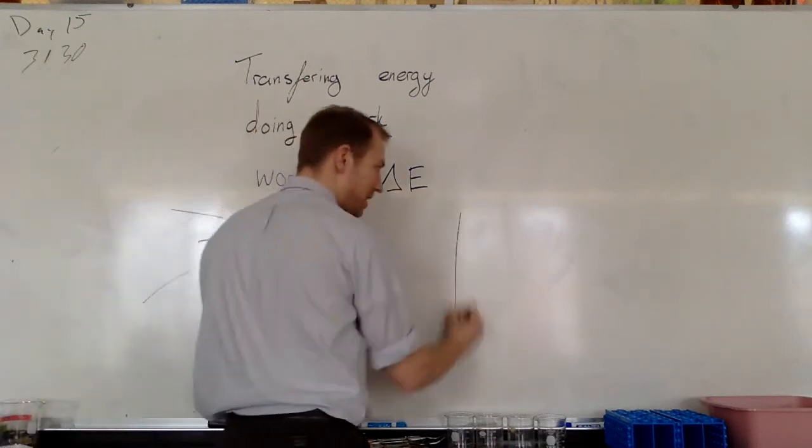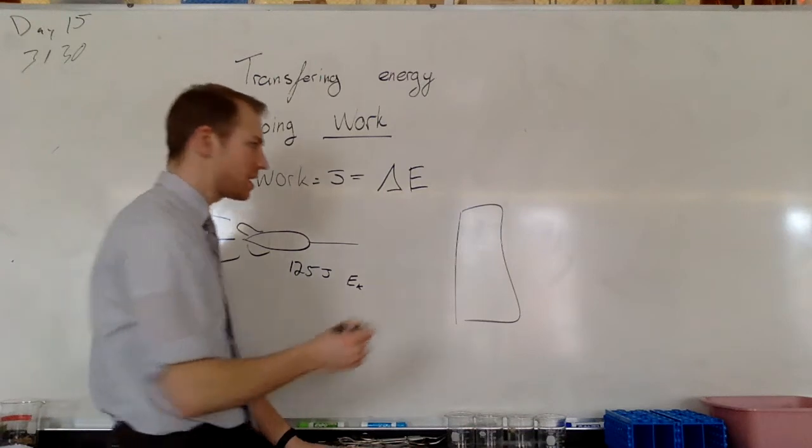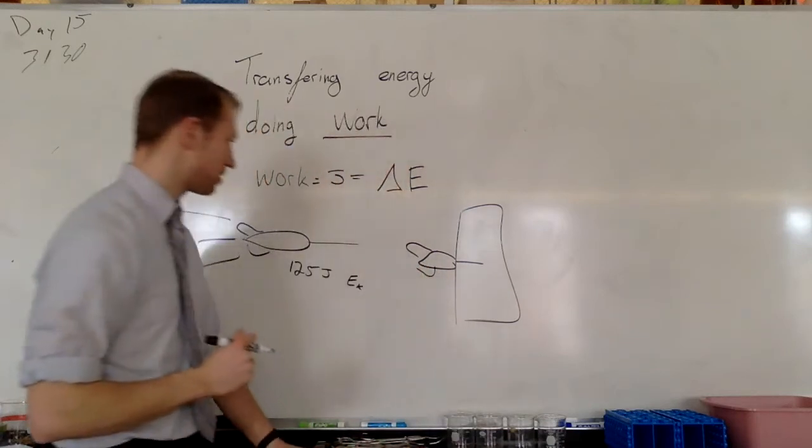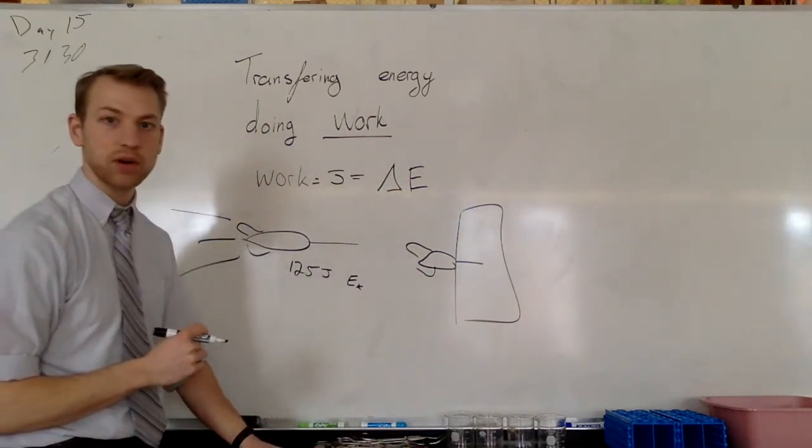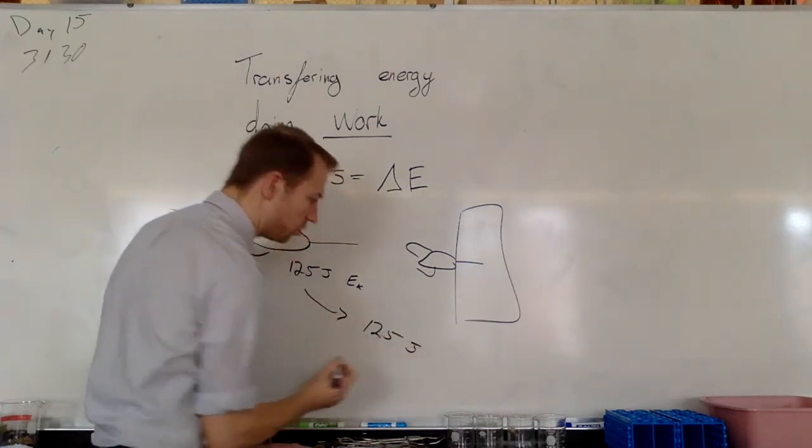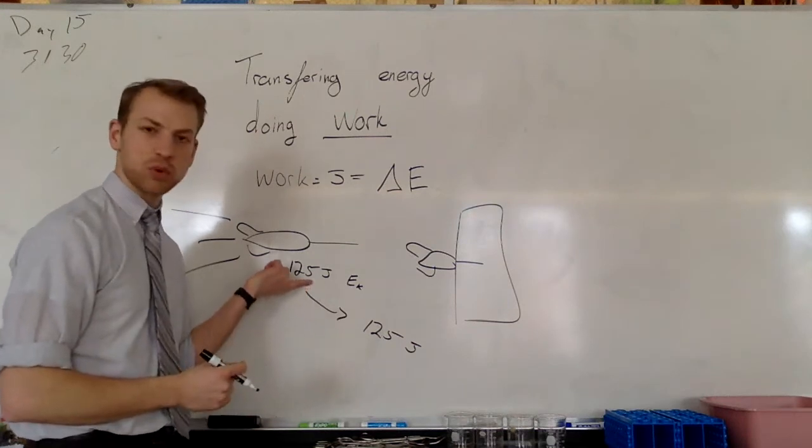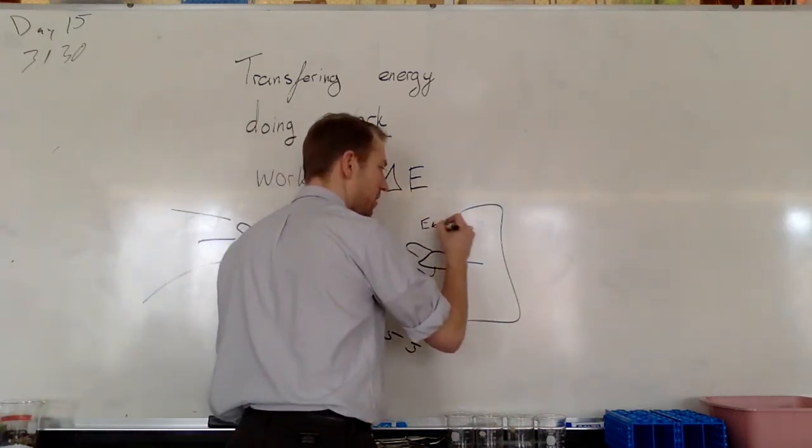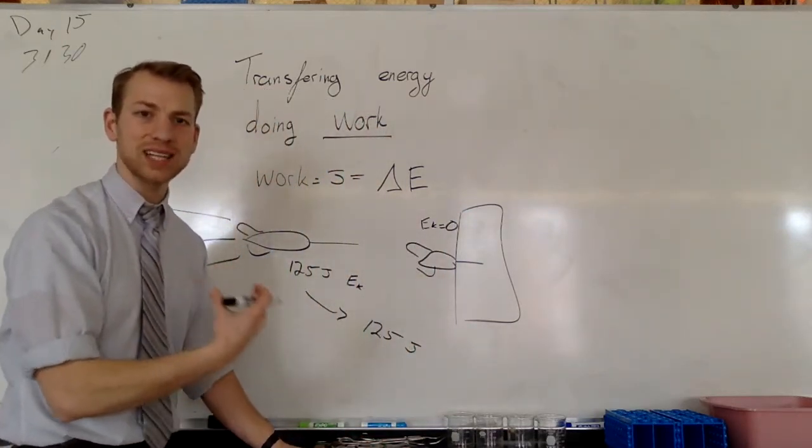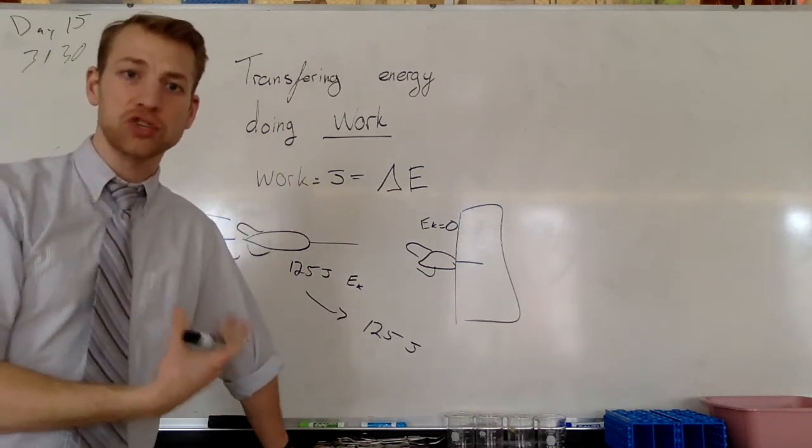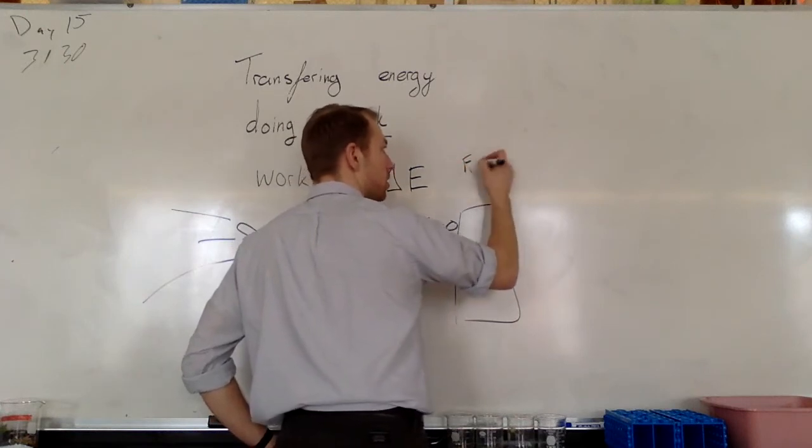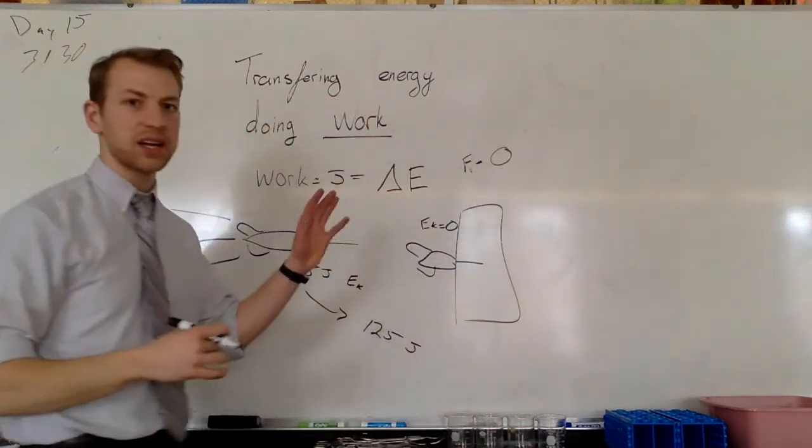Once it hits the dartboard, it comes to a complete stop. Now it's punched into the dartboard. I know that I have done 125 joules worth of work because my kinetic energy is 125 here, here my kinetic energy is zero. That being said, we can use this concept to determine how much friction there was. All of this energy is now in friction.